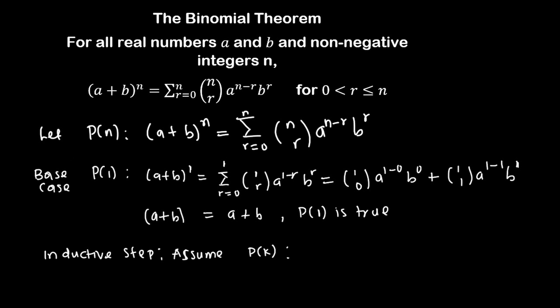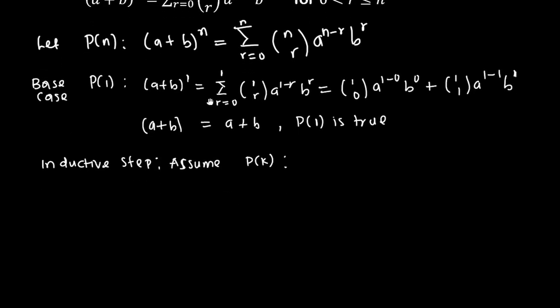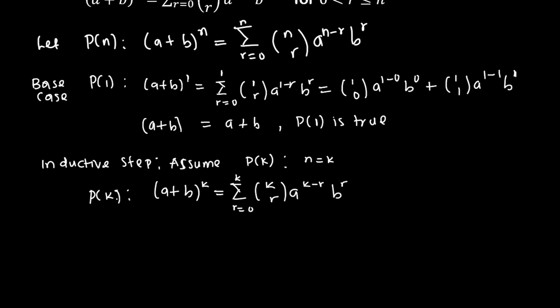Our proposition P(k) is: if we substitute k into our proposition, we get (a + b) raised to power k equals the summation r from zero to k of C(k, r) times a raised to power k minus r, times b raised to power r. We are assuming this is true. What we want to prove is that P(k+1) is also true. Once we can prove P(k+1) is true, then by induction the binomial theorem is proved.